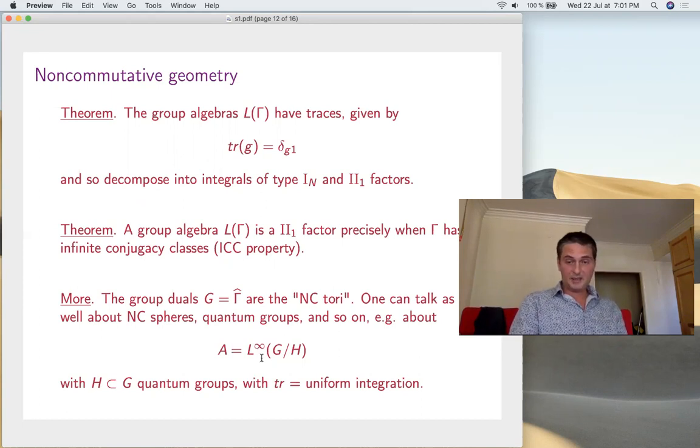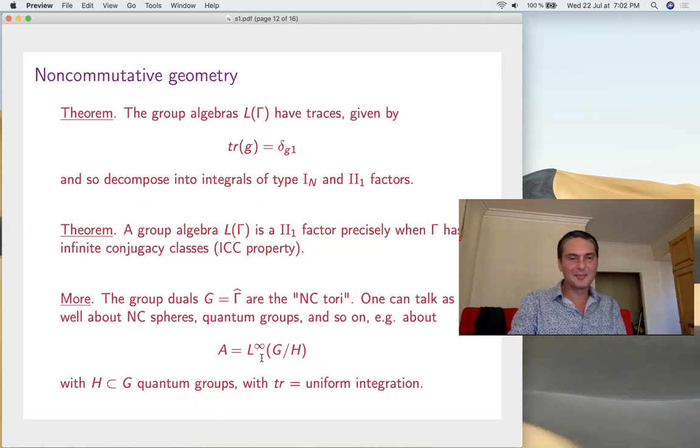Once again, as it was the case with random matrices, free probability, I was telling you that you can just stop there. Here also, you can just stop here, noncommutative geometry, quantum groups, and things like that, your whole life. But let's go beyond now and see what else can be done with von Neumann algebras.